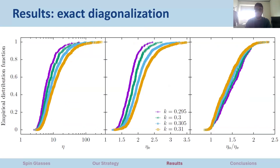Looking at the empirical distribution function of the correlation length — remembering that correlation length and gaps are connected — we see that the odd correlation length distribution is much more spread and has a strong dependence on the value of k, associated with the smaller gap for the different-parity sector. Looking at the distribution of the ratio between the odd and even correlation lengths, they are of the same order of magnitude, but the odd energy gap is usually smaller than the even gap.